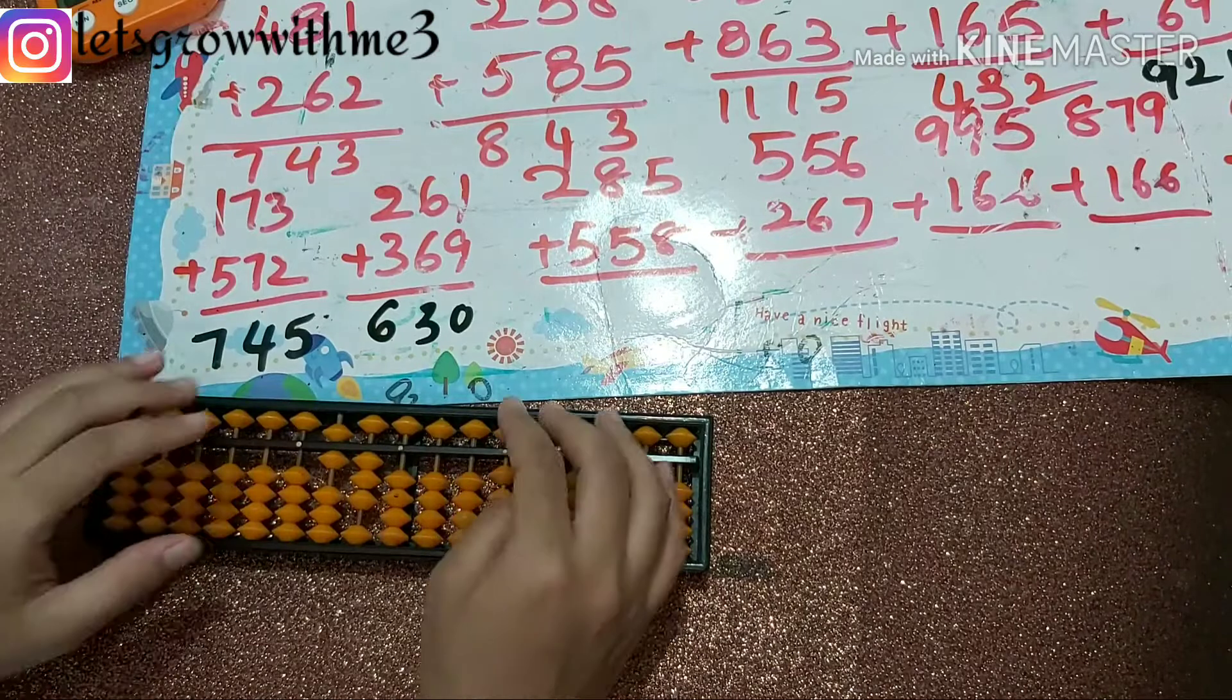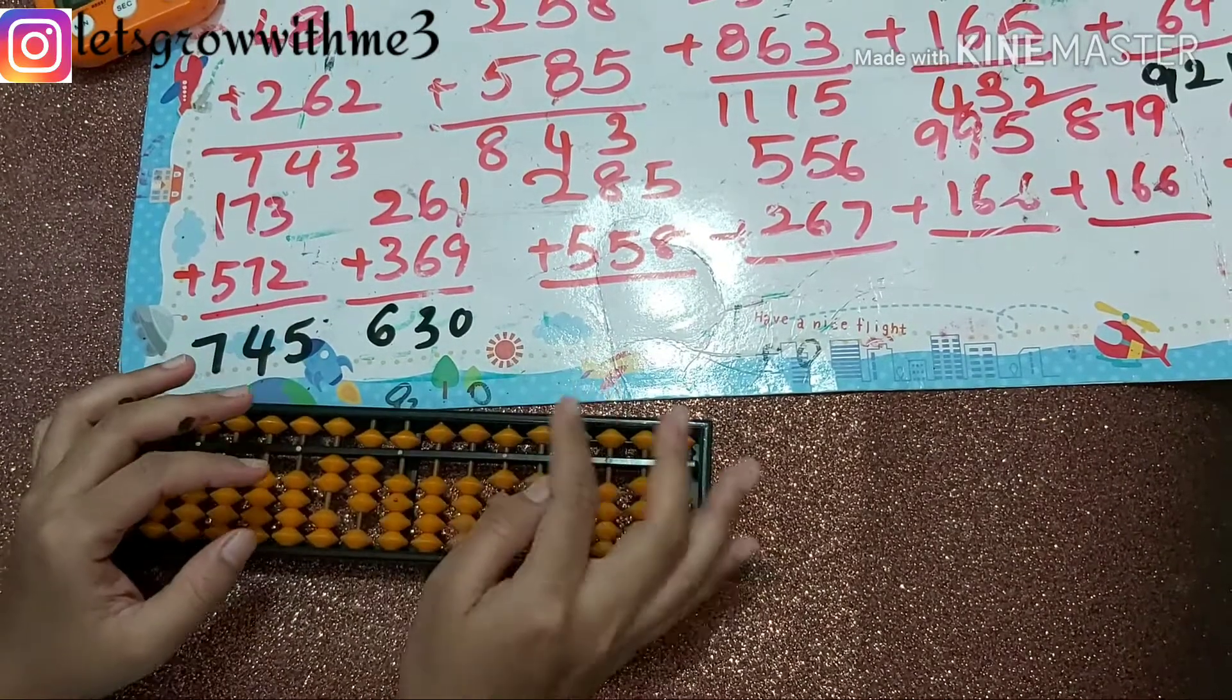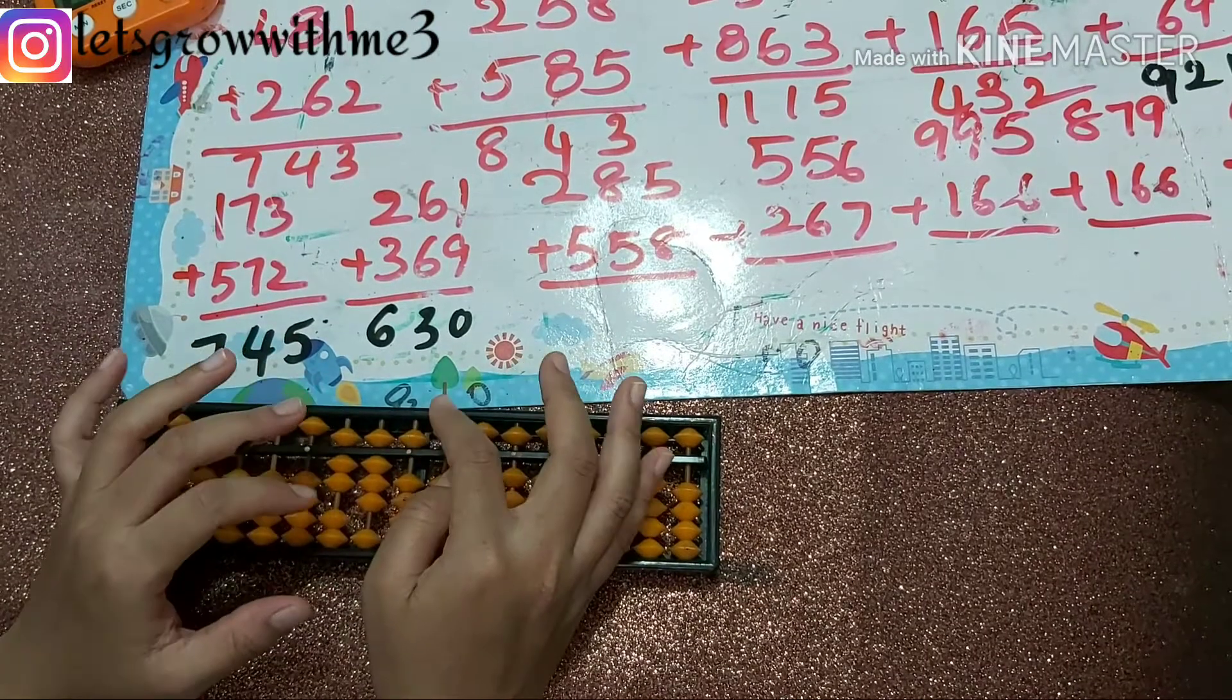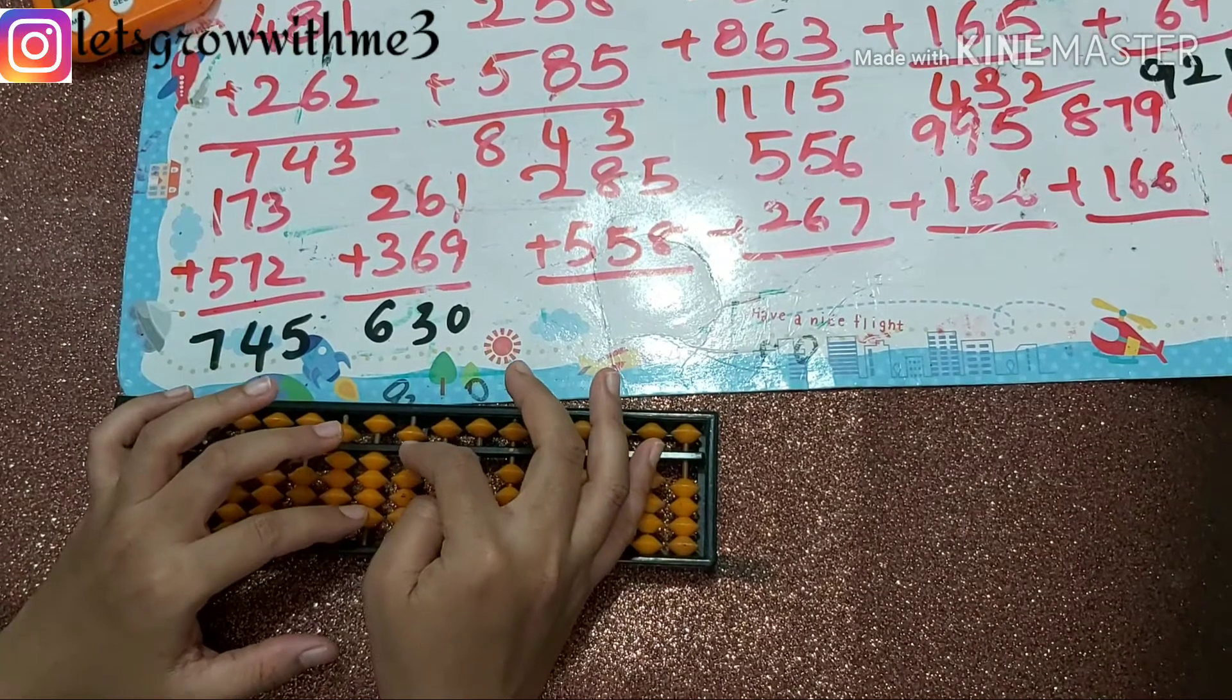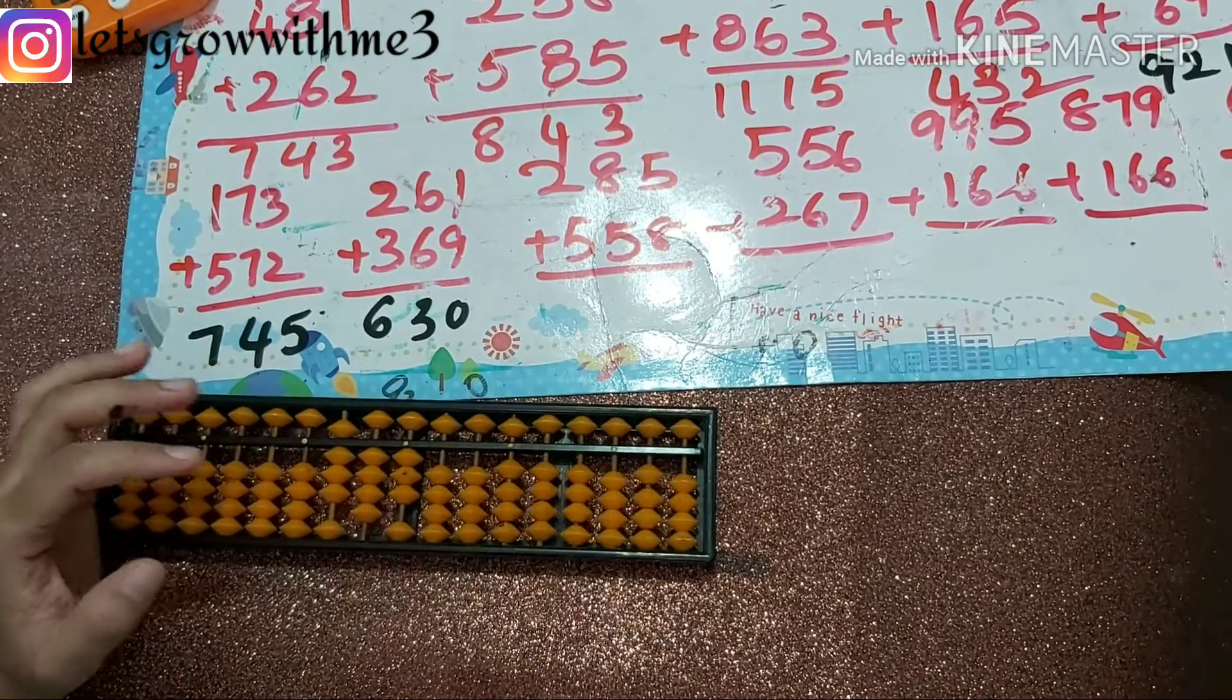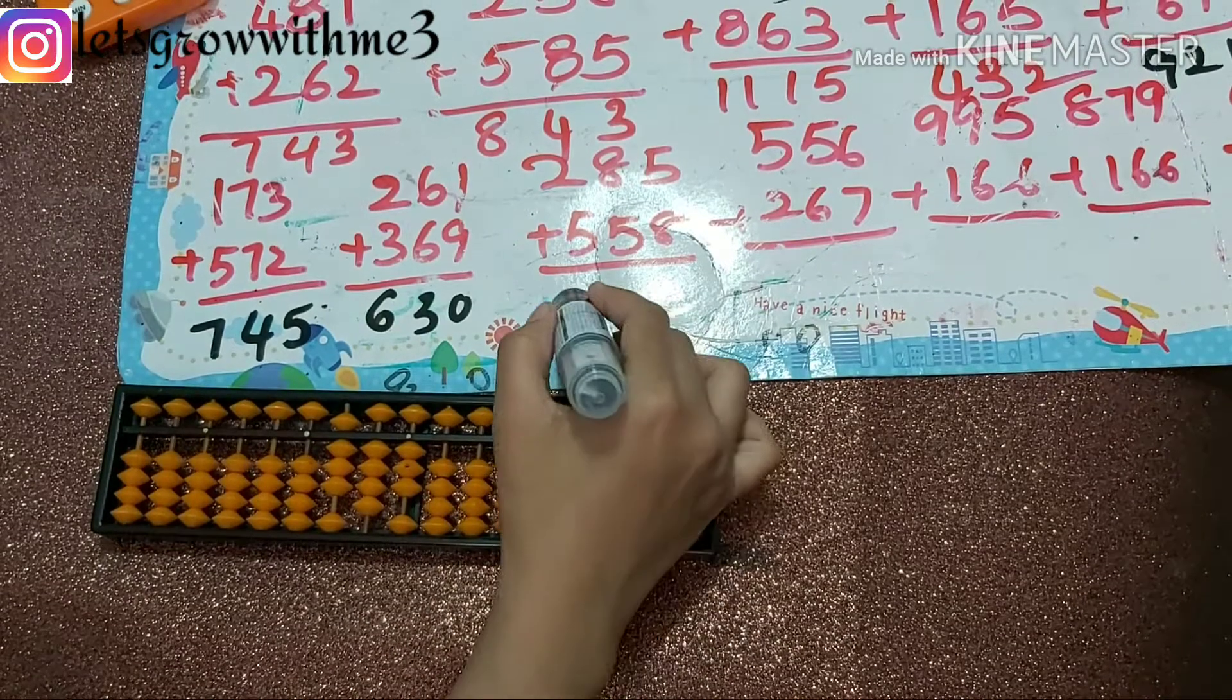Next one: 285 plus 558. Papa, mama, 8 papa, mama, babies up. So answer is 843.